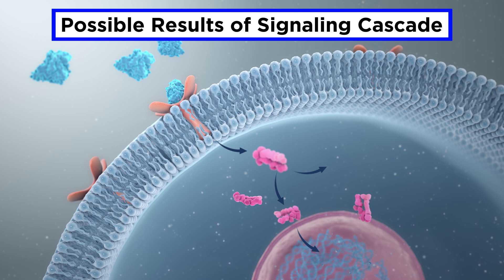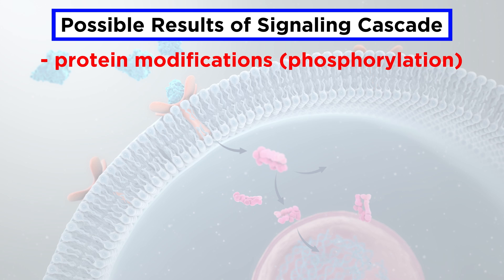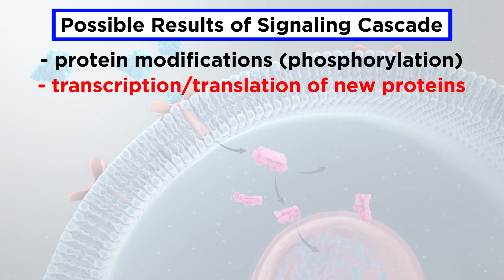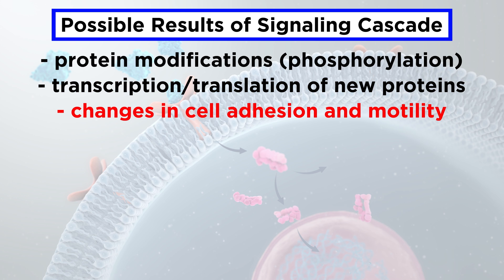The end of a signaling cascade can lead to a huge range of possible outcomes, including protein modifications like phosphorylation, transcription and translation of new proteins, changes in cell adhesion and motility, and phagocytosis.